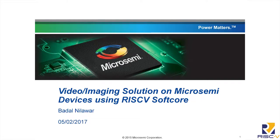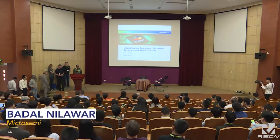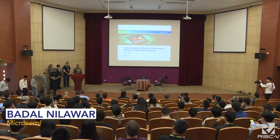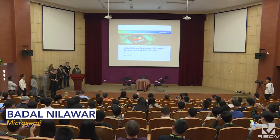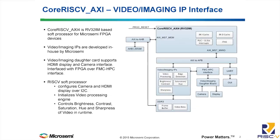Hello everyone, I am Badal from MicroSemi India. In one of our MicroSemi APIs, we are interfacing video IPs with RISC-V software. We are using RISC-V software to configure the video IP and the HDMI display and camera interface. Apart from that, on RISC-V we can control some of the enhancement features of the video IP, like brightness and saturation.